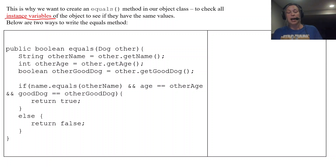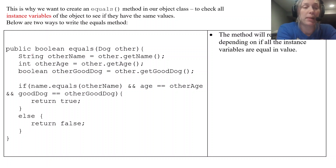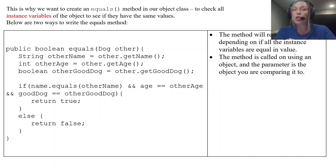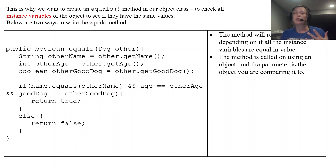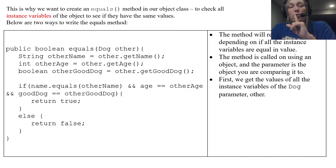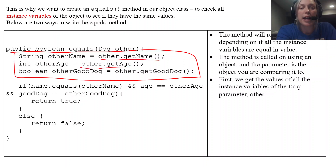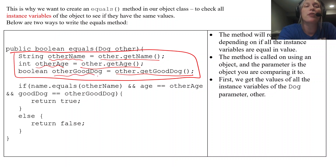There are two ways to write this equals method. The first way: it's a public method that returns a boolean — true or false depending on whether all instance variables are equal. This method is called on an object using dot notation, with the parameter being the object you're comparing to, which we call 'other'. First, we get the values of all instance variables of that Dog parameter: other.getName(), other.getAge(), and other.getGoodDog(), using those accessors, storing them in variables otherName, otherAge, and otherGoodDog.